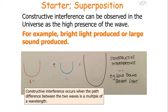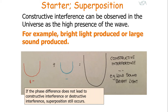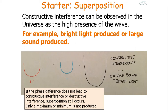Constructive interference occurs when the path difference between the two waves is a multiple of a wavelength — one wavelength, two wavelengths, three wavelengths. In terms of phase difference, it's a multiple of 360° or 2π radians: 2π, 4π, 6π, 8π radians. If the phase difference doesn't lead to exact constructive or destructive interference, superposition still occurs — you get one resultant wave — but it won't be a maximum or zero; it'll be somewhere in between.